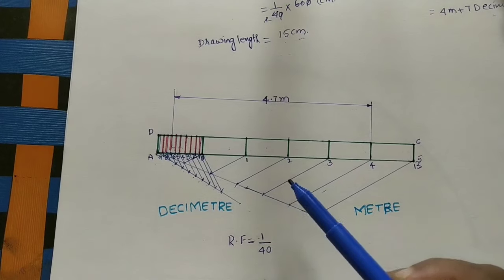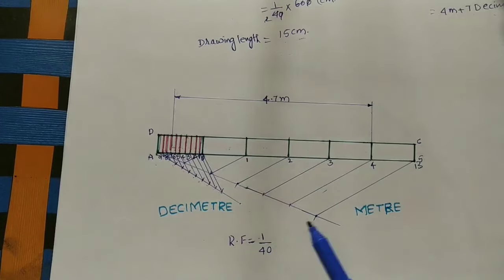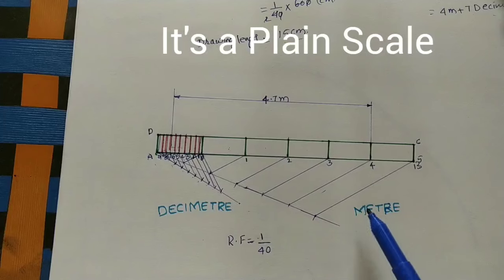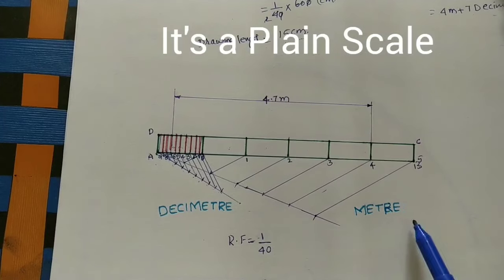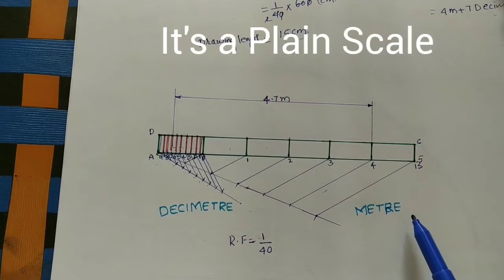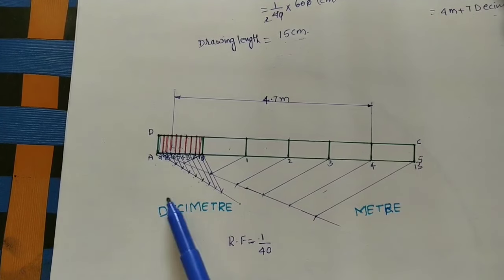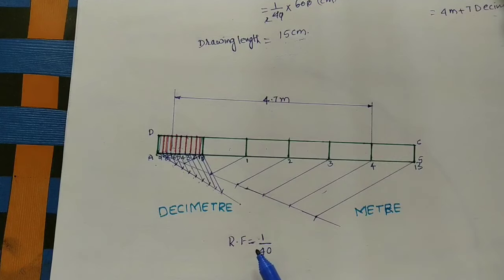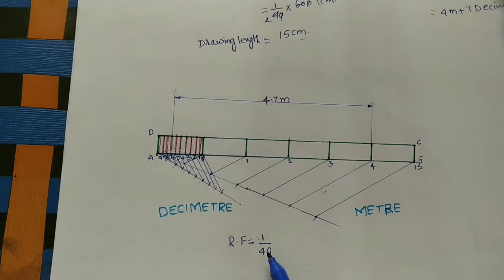After marking the measurement, write the unit labels: on one side write 'METERS' between two parallel lines, and on the other side write 'DECIMETERS'. Also write the RF value for the scale. For this scale, RF is 1 by 40.